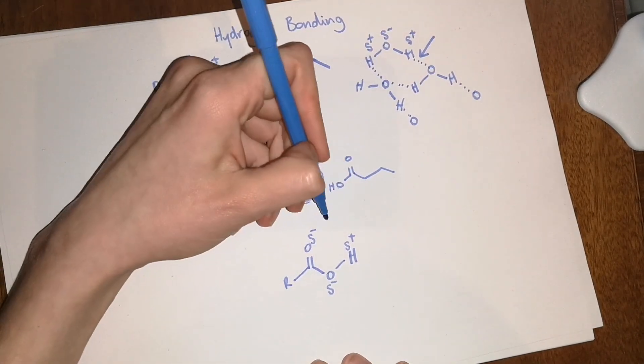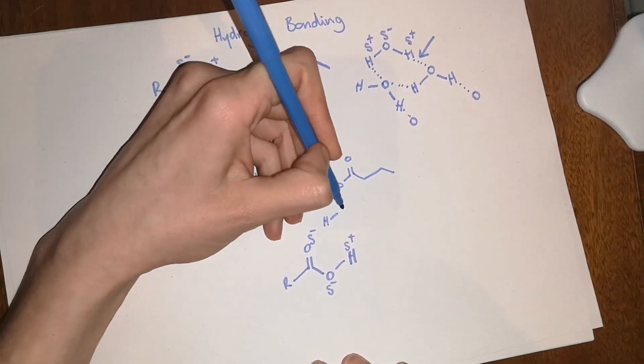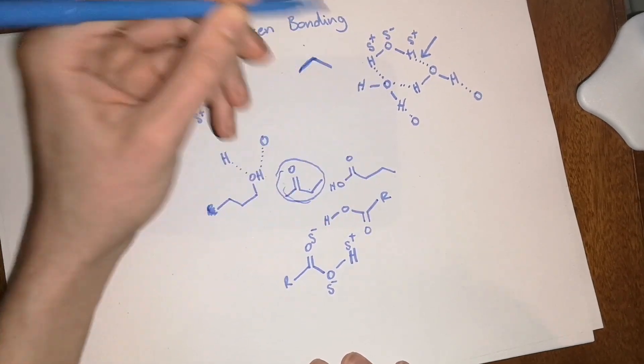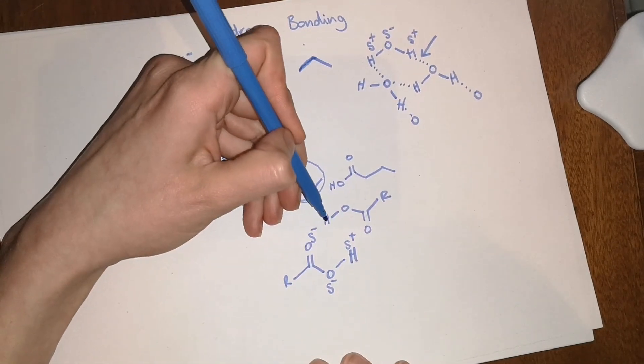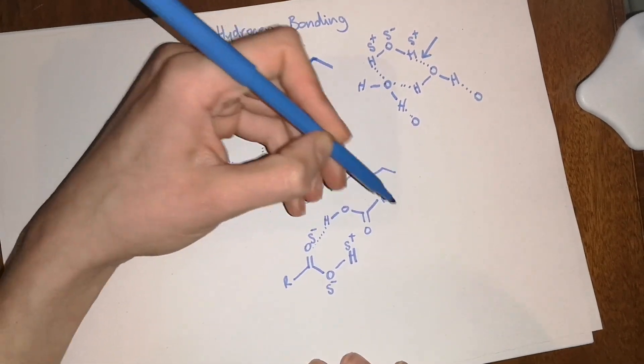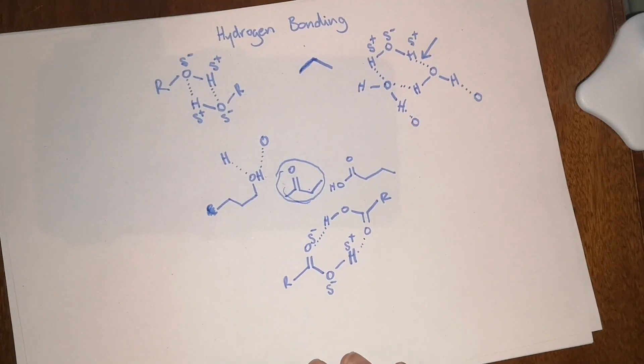So if you were to draw another molecule of this carboxylic acid, what happens now is that this hydrogen will form a bond to that oxygen, and this hydrogen will form a bond to that oxygen.